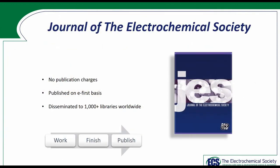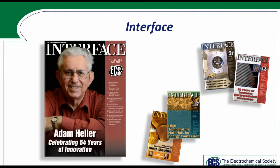Our flagship publication, the Journal of the Electrochemical Society, has been continuously published since 1902 and remains one of the most highly cited in electrochemistry. It is the only electrochemistry journal published by a non-profit society. Along with our journals, ECS publishes Interface, the quarterly magazine of record filled with the latest developments in the field and news about ECS members. Student chapters can use Interface to report on activities and showcase events to attract interest.